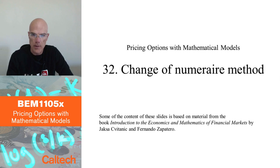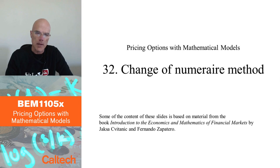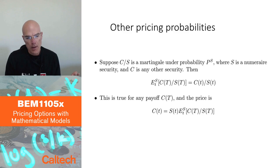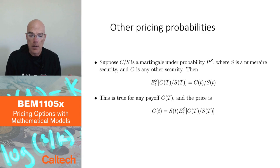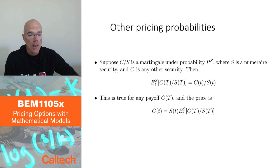So far we have measured everything relative to the bank account because we were discounting by the bank account. But the bank account doesn't really have any special role — the reason we discount by it is basically historical, because that was the first asset used to compute present value. There is really no special reason that we cannot discount by other assets instead.